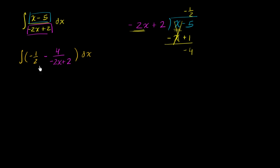If we divide the numerator by negative 2, negative 4 becomes positive 2. If we divide negative 2x by negative 2, that just becomes x. And 2 divided by negative 2 is minus 1.